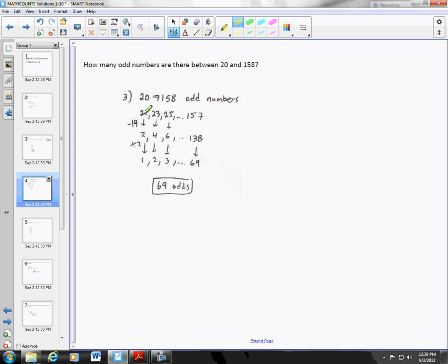The next one: how many odd numbers are there between 20 and 158? First you have to figure out that we're counting by odds. So the first number is going to be 21, then 23, 25, etc., all the way up to 157.